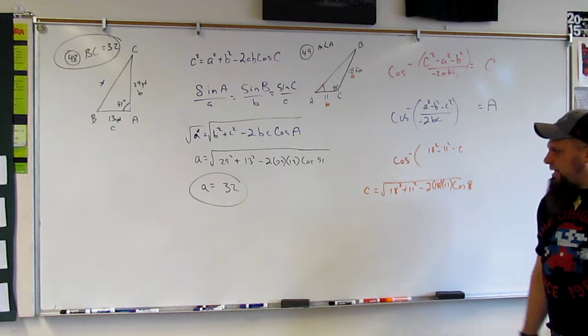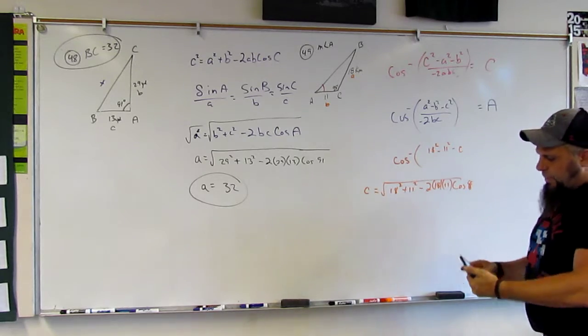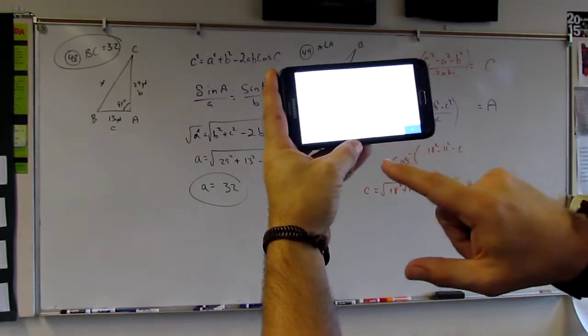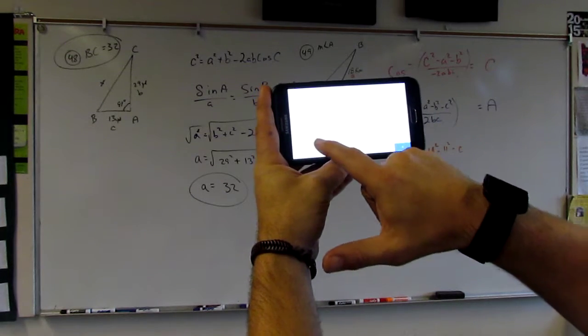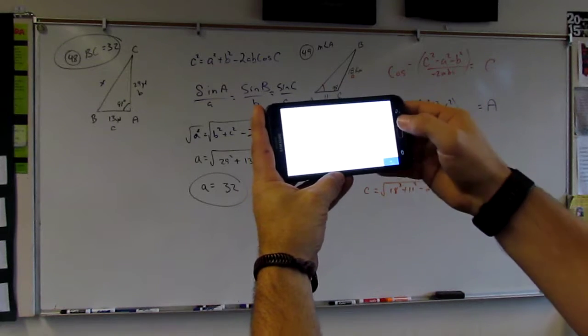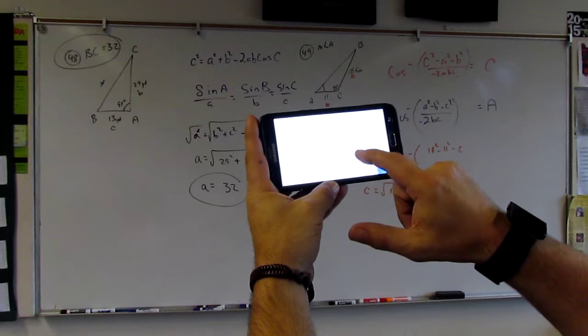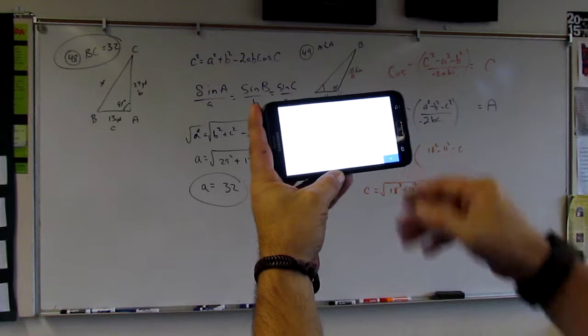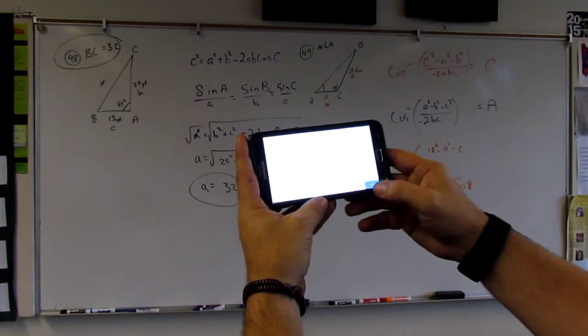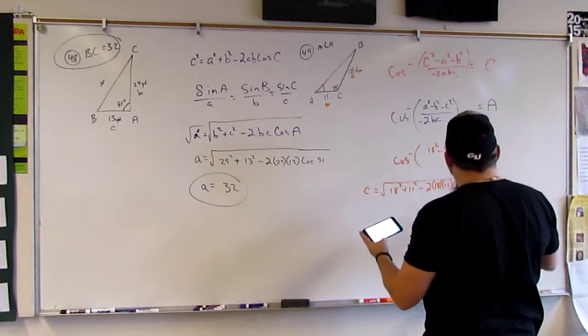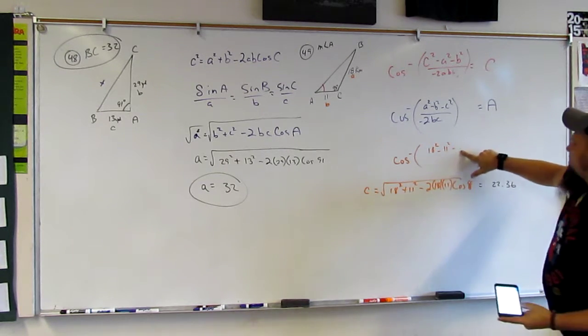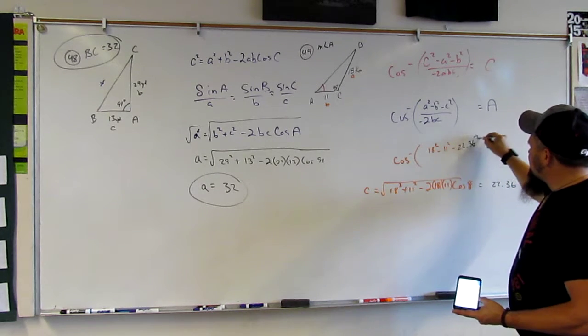So, what we do is we plug that in to our calculator. So, we have the square root of C, so we have the square root of 18 squared, plus 11 squared, minus 2, times 18, times 11, times cosine 98. Equals, so C is equal to 22.36, right?